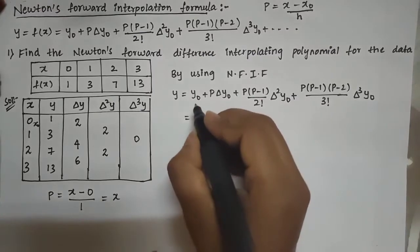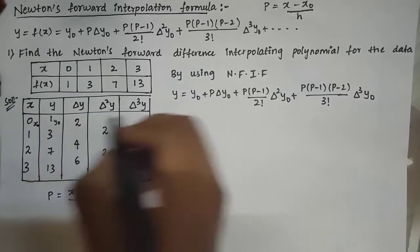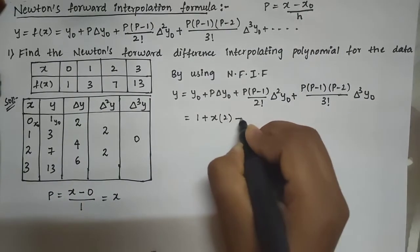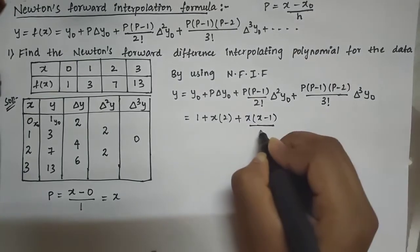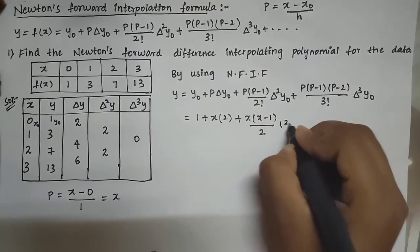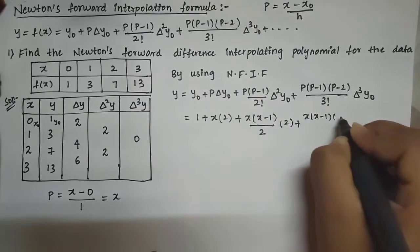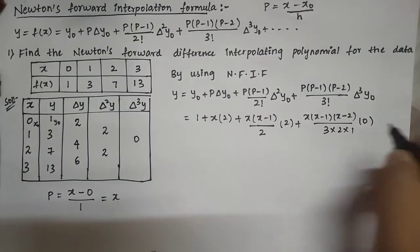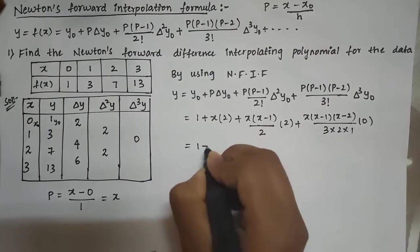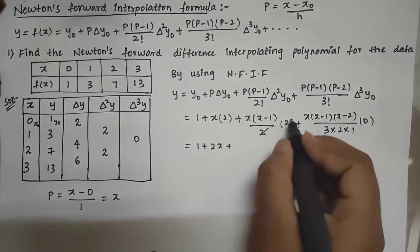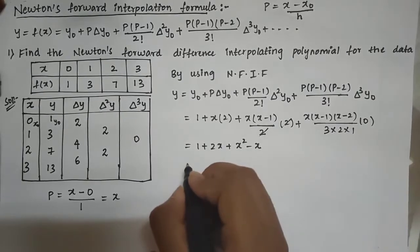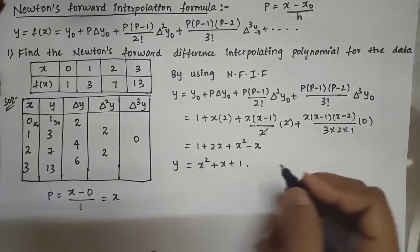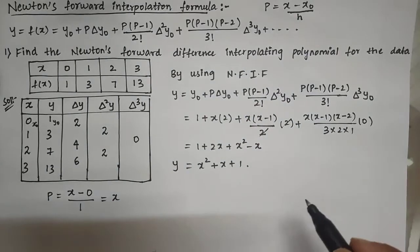Here y₀ = 1, Δy₀ = 2, Δ²y₀ = 2, and Δ³y₀ = 0. Substituting: y = 1 + x·2 + x(x−1)/2 · 2 + x(x−1)(x−2)/6 · 0. The last term is zero, so it vanishes. Simplifying: y = 1 + 2x + x²−x = x² + x + 1. This is the interpolating polynomial obtained using Newton's forward interpolation formula.